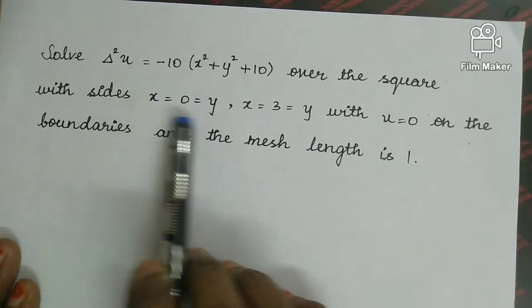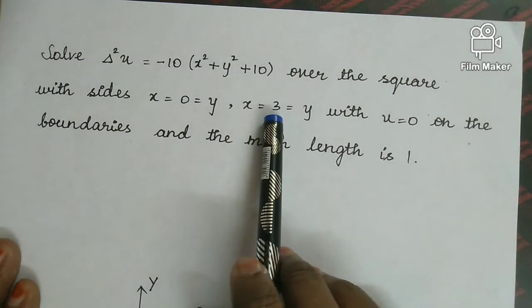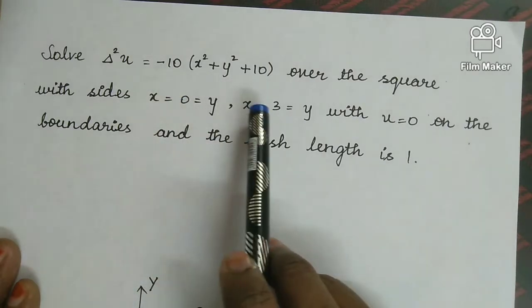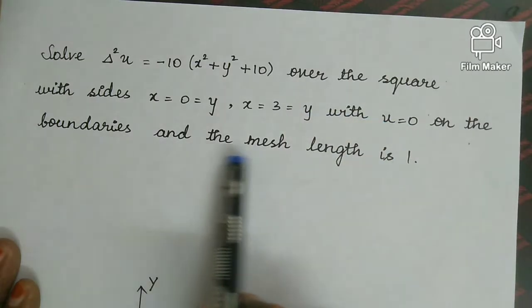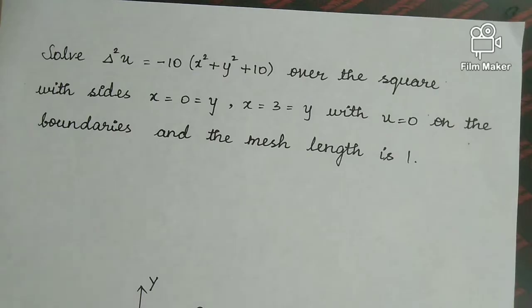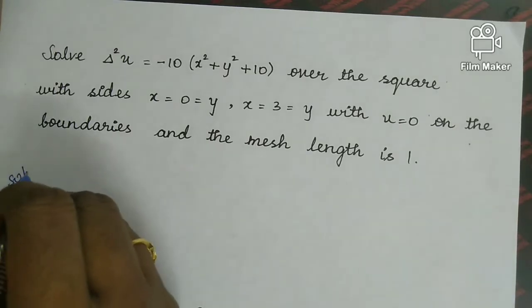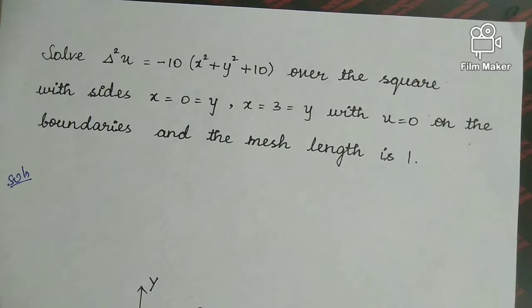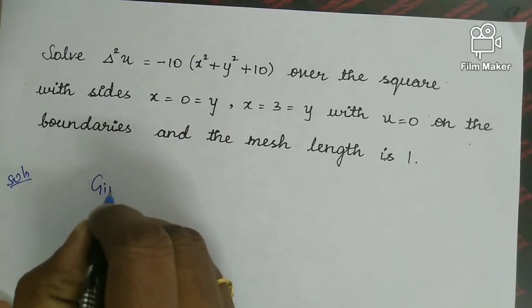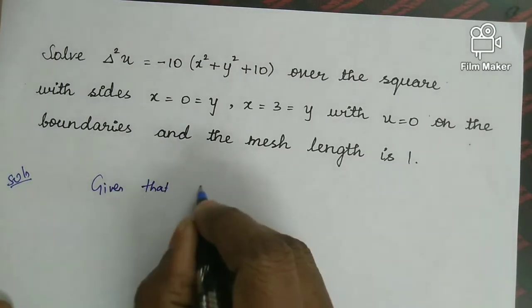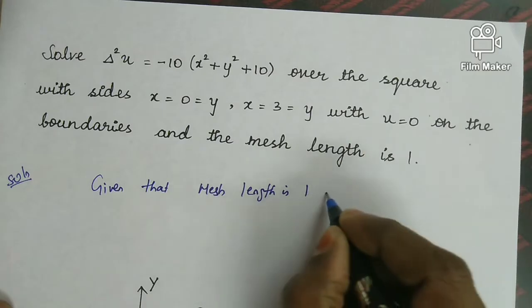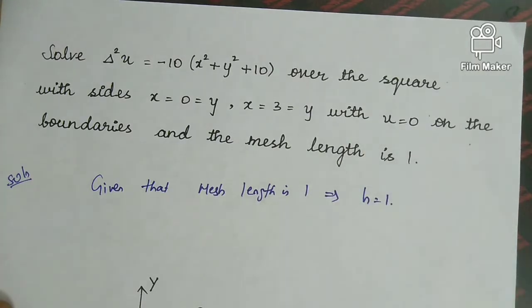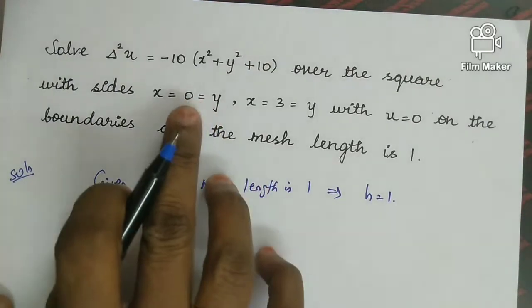Looking at the question, the differential equation has a non-zero right-hand side, confirming this is Poisson's equation. The x values range from 0 to 3 and y values from 0 to 3. The starting point is (0,0) and the end point is (3,3), with mesh length h equal to 1. So x takes values 0, 1, 2, 3 and y takes values 0, 1, 2, 3.